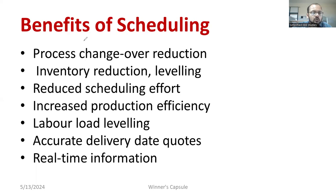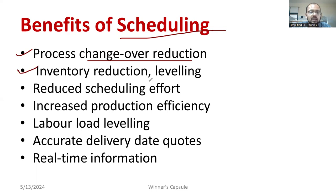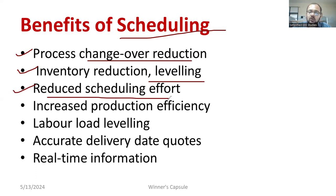Why do we go for scheduling? The major advantages include: process changeover reduction — we can minimize changing from one method to another. We can save inventory and reduce the cost of inventory. Leveling costs can be reduced. Scheduling effort can be reduced as well. Going for either forward or backward scheduling gives us a better plan.